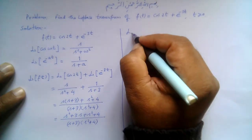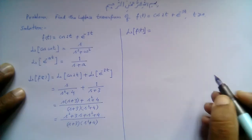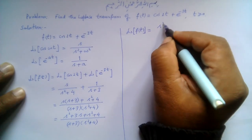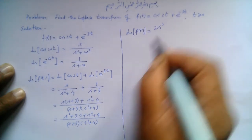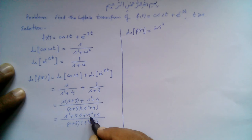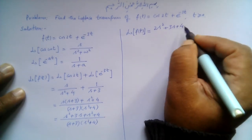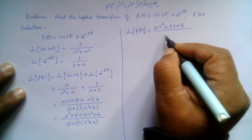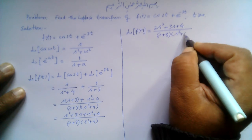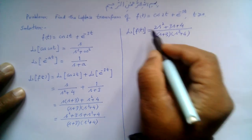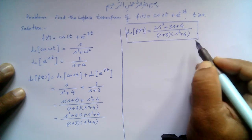So the Laplace transform of f(t) equals 2s² + 3s + 4, divided by (s + 3)(s² + 4). This is the desired Laplace transform of the given function.